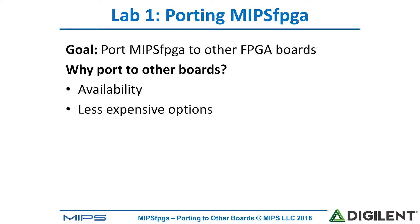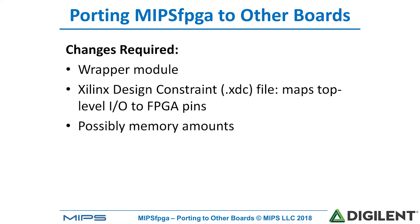You may want to do this because of existing supply or choosing a less expensive option. The steps for porting MIPS FPGA to other boards are to first change the wrapper module and also the Xilinx design constraints file to map the top level I/O pins to the FPGA board. Depending on the amount of memory available on your FPGA board, you may need to change that as well.